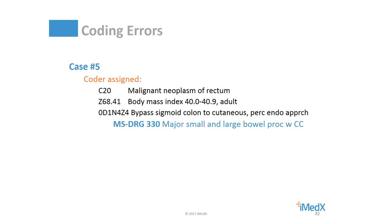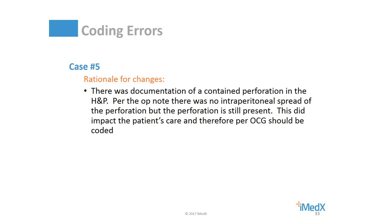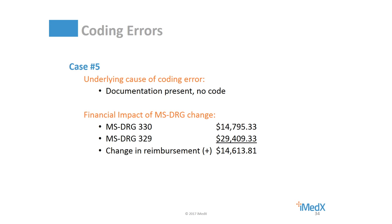Now let's move on to case five. The patient had a bypass of the sigmoid colon due to a malignant neoplasm of rectum. The coder assigned Z68.41, body mass index 40.0 to 40.9 adult, which was a CC. The consultant added K63.1, perforation of intestine, which is an MCC in this case, resulting in a change from MS-DRG 330 to 329. The rationale was that documentation in the H&P and the operative notes supported the presence of the perforation and the impact it played on the patient's care. Documentation was present, but no code had been assigned. The financial impact was significant — an increase of over $14,000 due to the addition of the overlooked MCC, perforation of intestine.